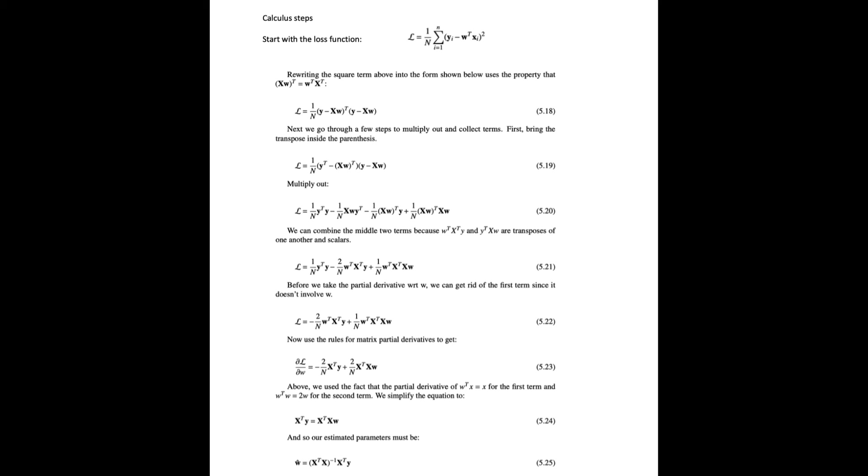Then we go through a few steps to multiply out and collect terms. First we bring the transpose inside the parentheses, and then we multiply out to get four terms.